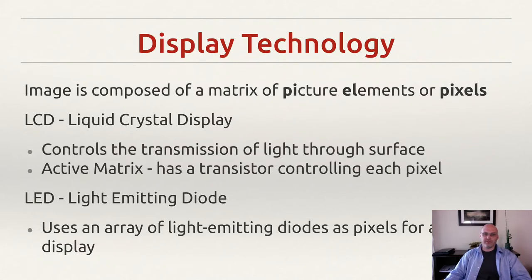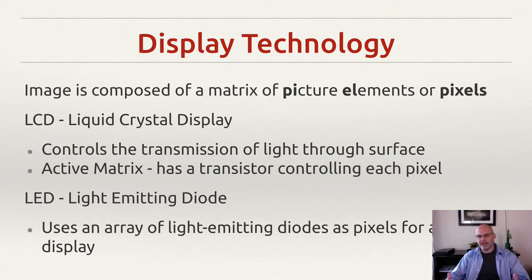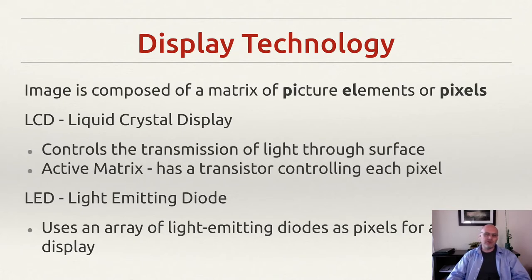We're going to start with the display, which is the most visual part of a computer's output and the one you definitely use the most. An image is comprised on your screen of an array of pixels. A pixel is a word created out of 'picture' and 'element' shoved together. It's a matrix — you have a number of pixels across the top of the screen and down the screen, creating a grid. Most screens today have millions of pixels.